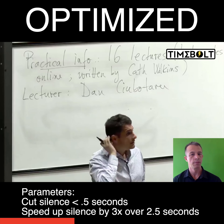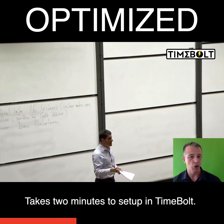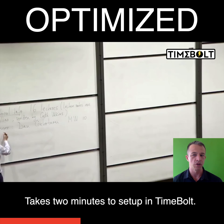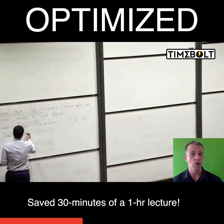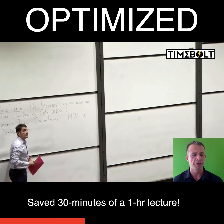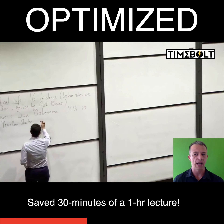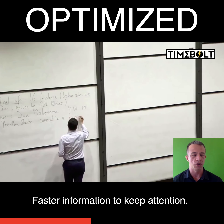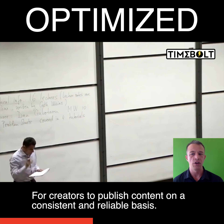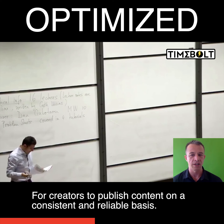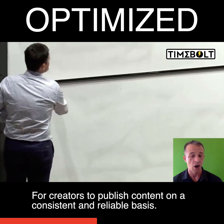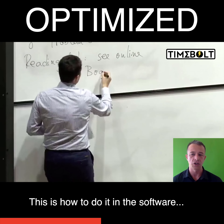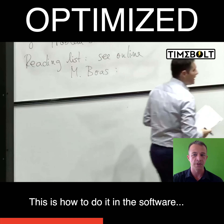My name is Dan Chibotaru. I'm going to show you how I did this, literally within two minutes inside TimeBolt software. I was able to save on an hour-long lecture 30 minutes of dead air, and sped up time to get you the information faster and quicker, so that your audiences keep attention, and you can publish content on a consistent, reliable basis, because all of that work is now automated for you. I'll show you how I did it in the software — that's what's up next.